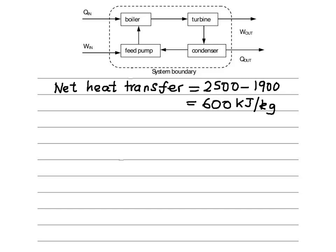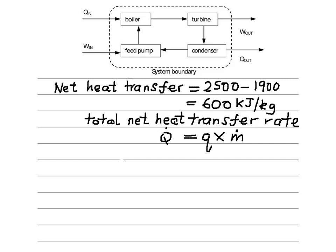Now the total heat transfer rate is given by Q dot, which is small q - because remember we were given heat transfer rate in terms of per kilogram of steam - multiplied by the mass flow rate.